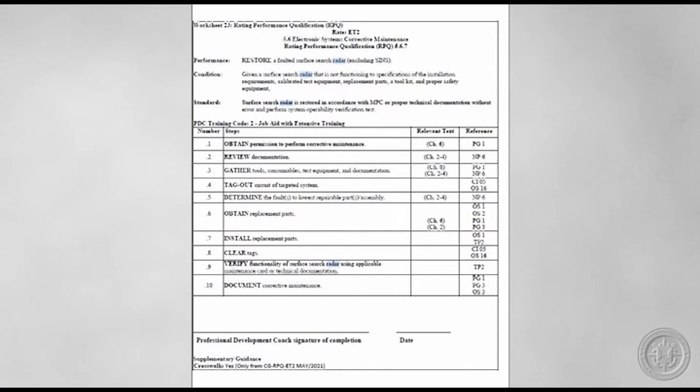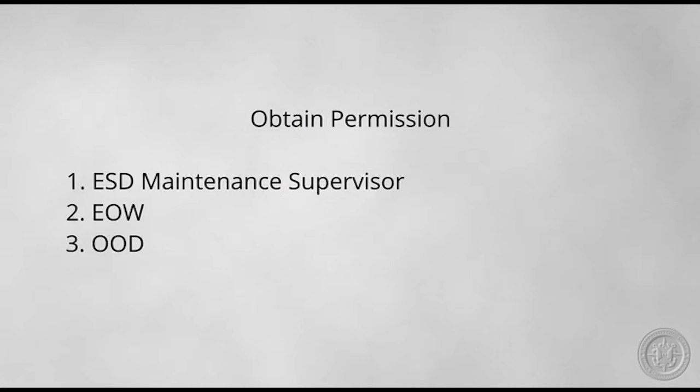In order to complete the SPRAC, read all the steps of the RPQ to ensure correct completion of corrective maintenance. The first step in completing the SPRAC is a technician who needs permission to start corrective maintenance. You can get permission from the ESD maintenance supervisor, as well as the EOW or OOD of a particular asset.